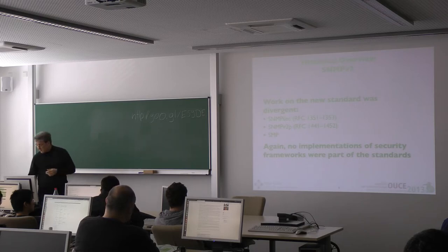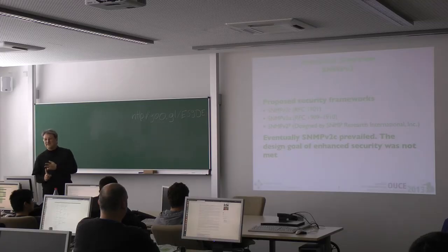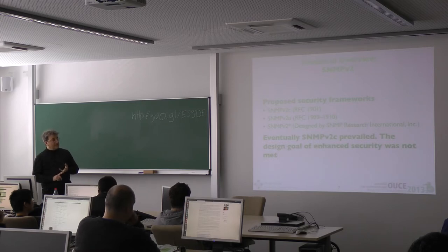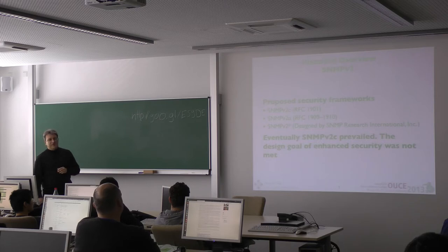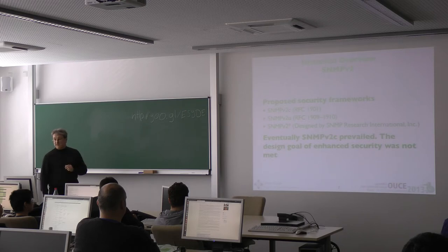There were three security frameworks. One was SNMPv2c, which is pretty well known — it's community-based, same as SNMPv1. Then there was SNMPv2u, a user-based security framework pretty similar to what was later implemented in SNMPv3. And there was SNMPv2*, also kind of user-based, designed by SNMP Research. Unfortunately, the SNMPv2* standard seems to have disappeared from their website. Given the choice between three security models, people chose the simplest and most familiar one: SNMPv2c.